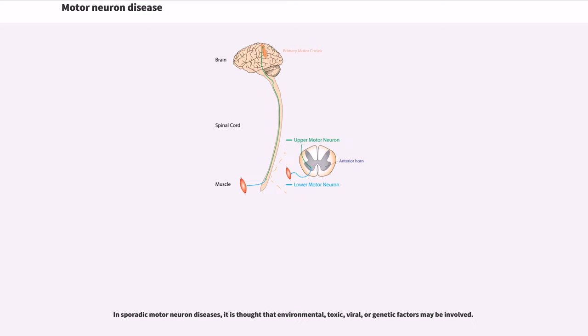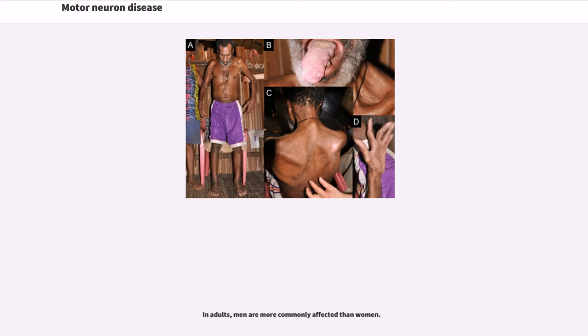In sporadic motor neuron diseases, it is thought that environmental, toxic, viral, or genetic factors may be involved. In adults, men are more commonly affected than women.